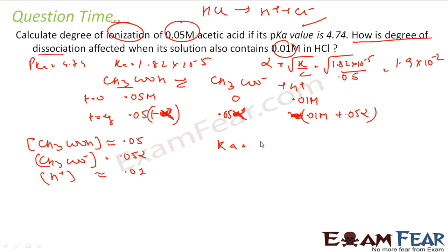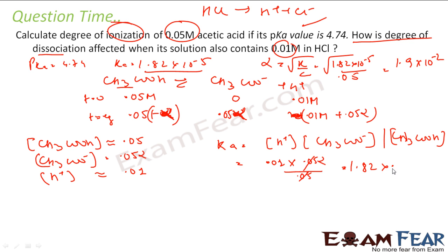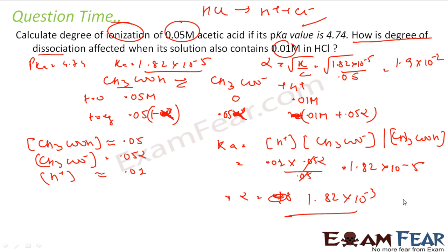Now applying the Ka expression: Ka = [H⁺][CH₃COO⁻] / [CH₃COOH]. Substituting: Ka = (0.01 × 0.05·alpha) / 0.05. The 0.05 cancels, giving Ka = 0.01 × alpha. We have Ka = 1.82×10⁻⁵, so alpha = 1.82×10⁻³.